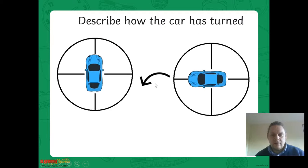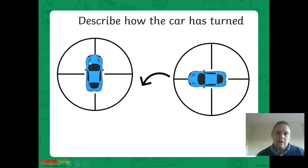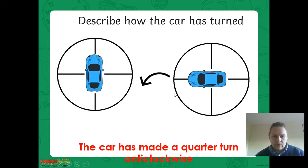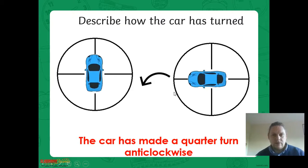Describe how the car's turned this time. We're looking at our arrow - this time we're going the other way. So what's that going to be? That is going to be anticlockwise. How far has the car turned? Started off here. It's made a quarter of a turn anticlockwise - it's now facing that direction. So a quarter of a turn anticlockwise.